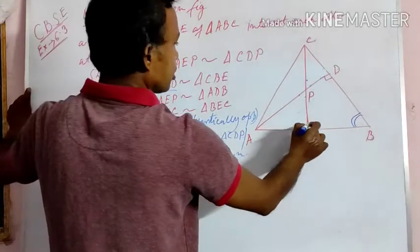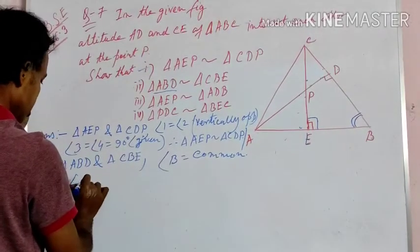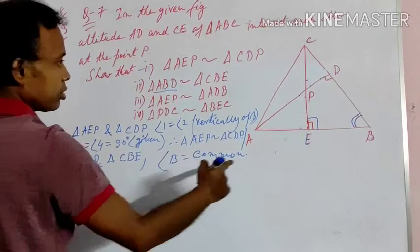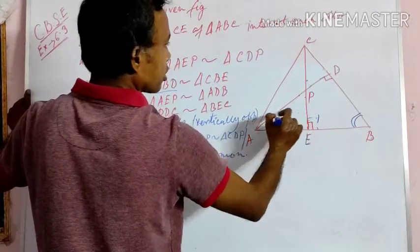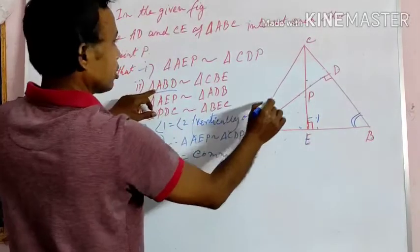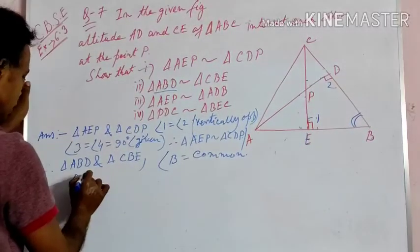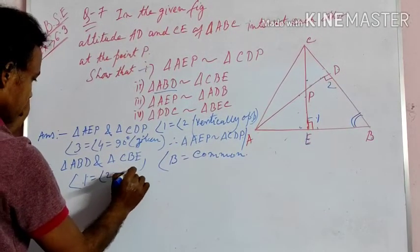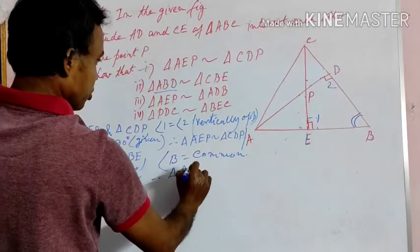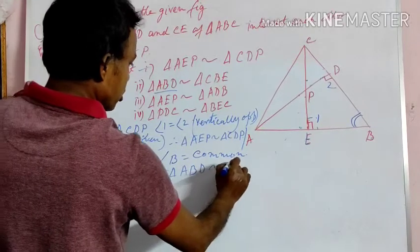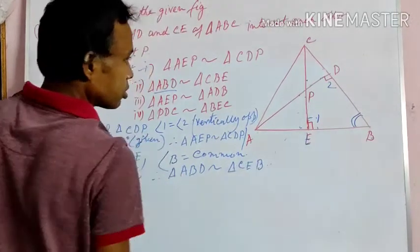Also, angle ADB (angle 1) and angle CED (angle 2) are both equal to 90 degrees, since AD and CE are altitudes. Since two angles of both triangles are equal — one is the common angle B, and the other pair are each 90 degrees — therefore triangle ABD is similar to triangle CDE.